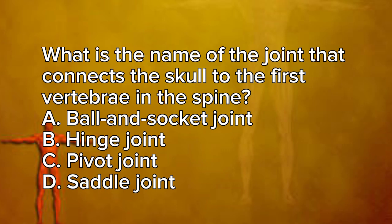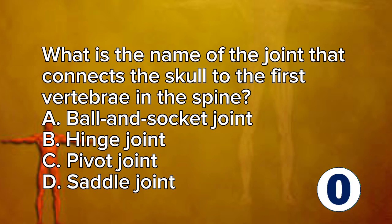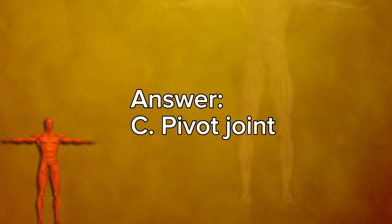What is the name of the joint that connects the skull to the first vertebra in the spine? A. Ball and Socket Joint. B. Hinge Joint. C. Pivot Joint. D. Saddle Joint. Answer: C. Pivot Joint.